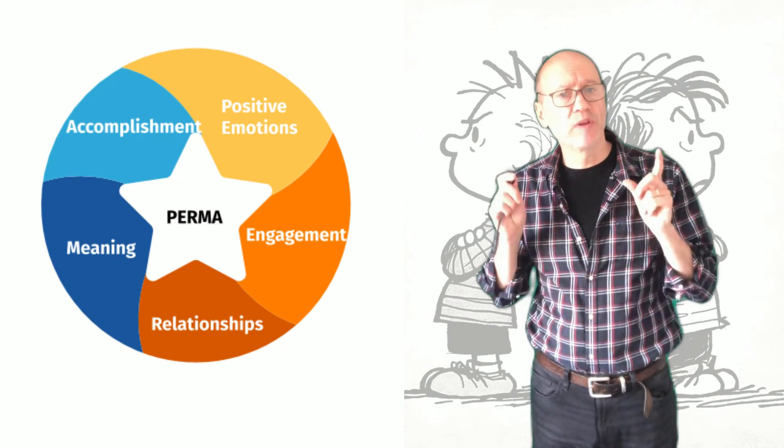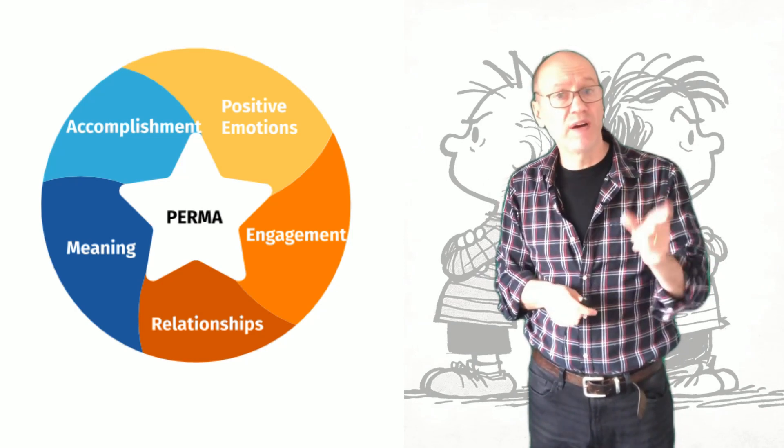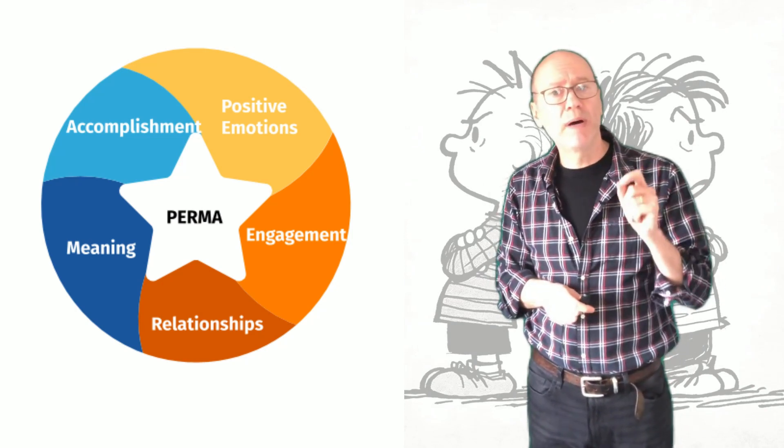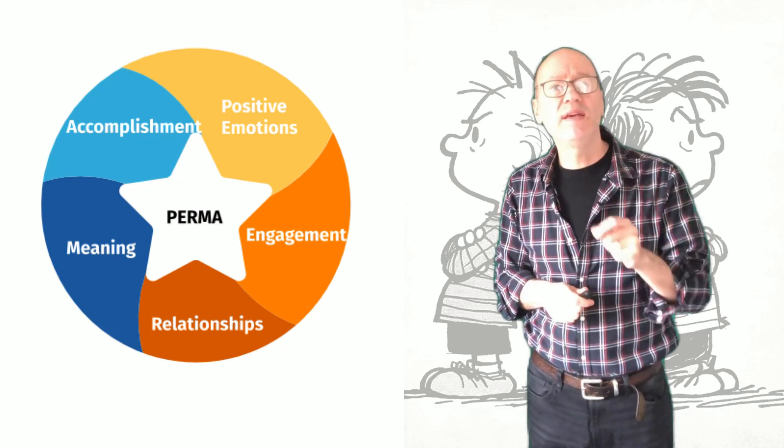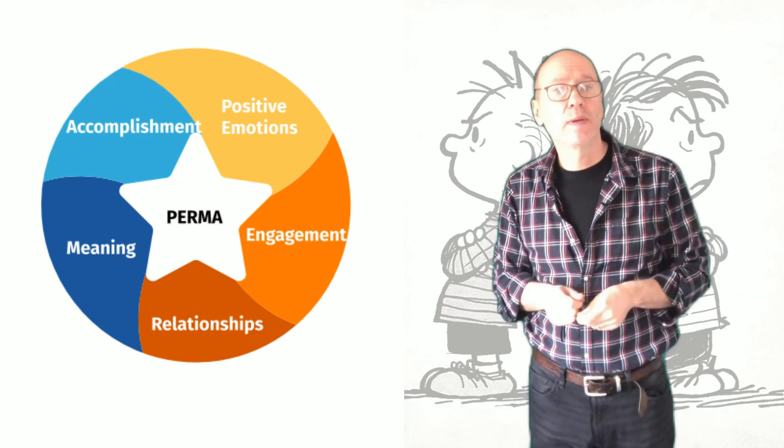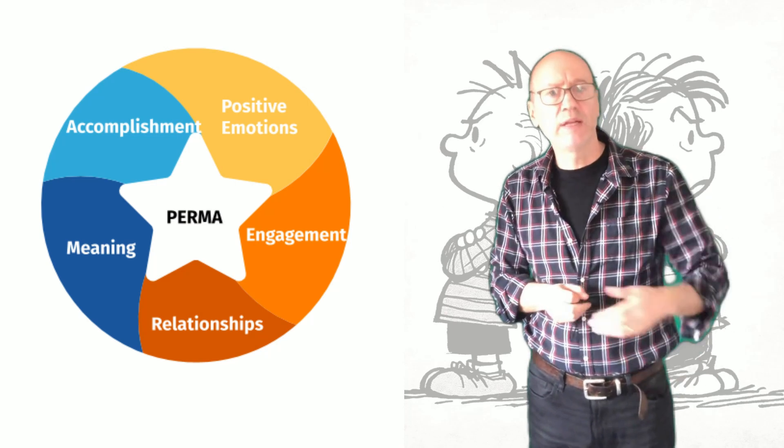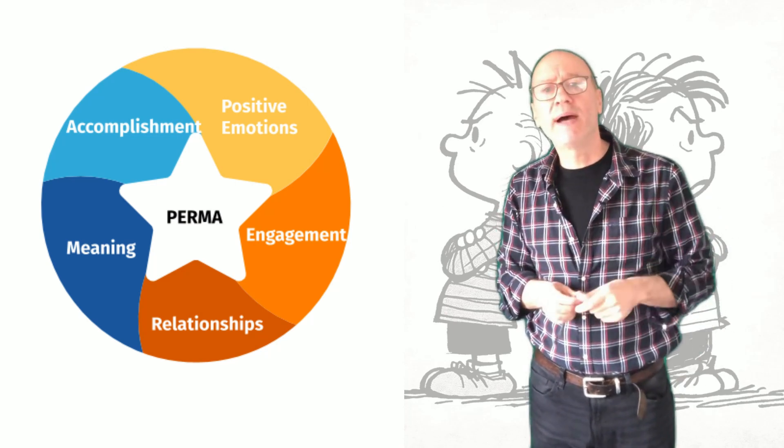Remember, today we're talking about the PERMA model for well-being and the five components. Having positive emotions is a key component of happiness and well-being. They help you become more resilient in your daily life and they combat those negative emotions.